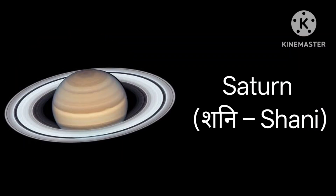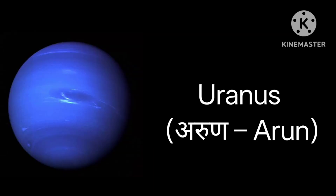After Jupiter comes Saturn. Look at this majestic planet — its rings look so beautiful! Saturn is known as Shani Graha in Hindi.